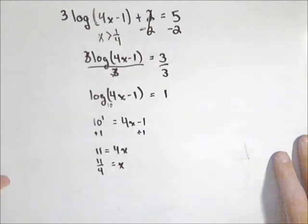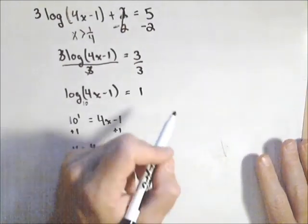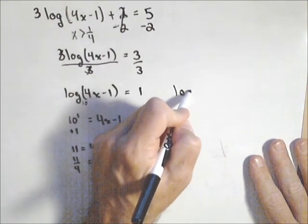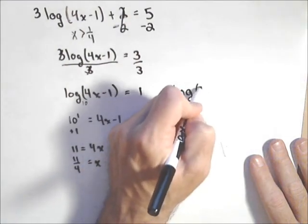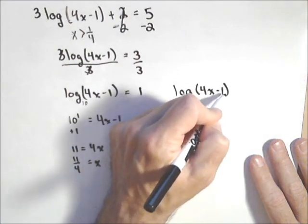Now another way to think about solving this, when we got to this step right here. Log of four x minus one equals one.